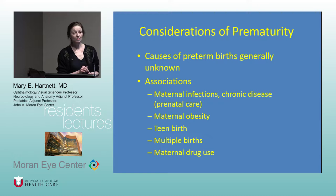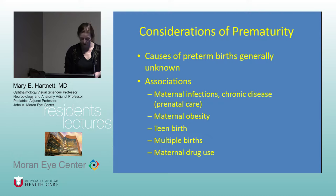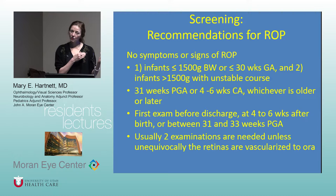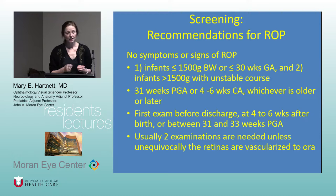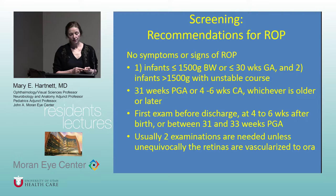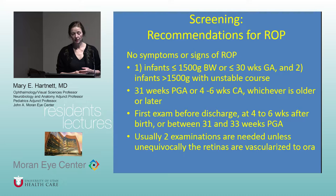General considerations for prematurity include maternal infections, chronic disease, maternal obesity, teen birth, multiple births, and maternal drug use — these are associated with premature birth. The causes of premature birth are still not completely known. Importantly, the symptoms or signs of ROP — there are none. So we have to screen infants. In the U.S., the recommendations are to screen infants less than or equal to 1500 grams or less than or equal to 30 weeks gestational age.